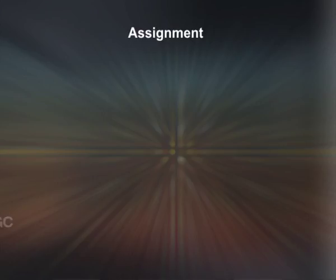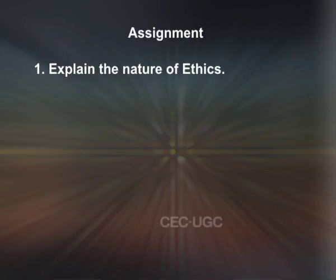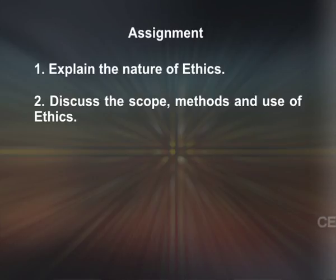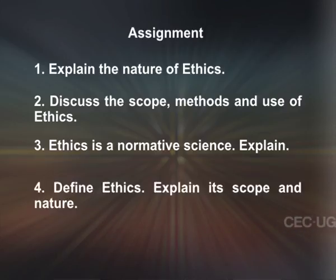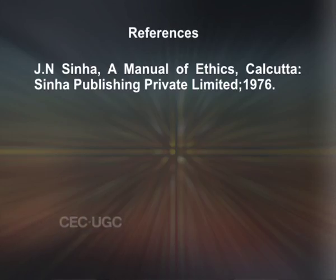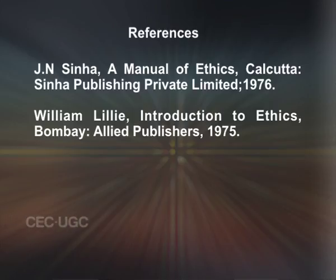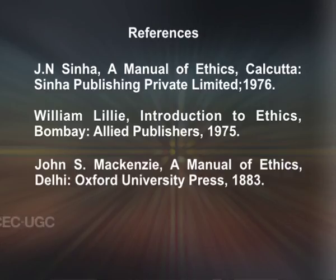Now there are a few assignments for you to work out. Number 1: explain the nature of ethics. Number 2: discuss the scope, methods and uses of ethics. Number 3: ethics is a normative science — explain. Number 4: define ethics and explain its scope and nature. Here are some books for your further reference. Number 1: J.N. Sinha, A Manual of Ethics, Sinha Publishing Private Limited, 1976. Number 2: William Lilley, Introduction to Ethics, Allied Publishers, 1975. Number 3: John Mackenzie, A Manual of Ethics, Oxford University Press, 1883. This is the end of the session. We will meet again with a new topic in the next session. Thank you.